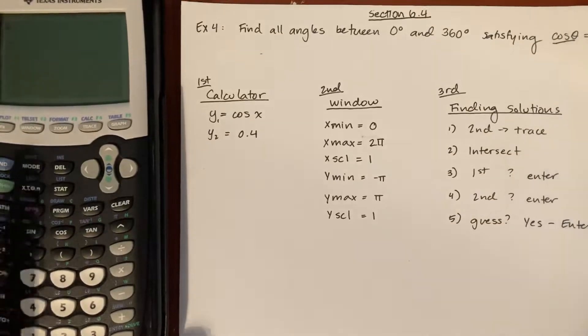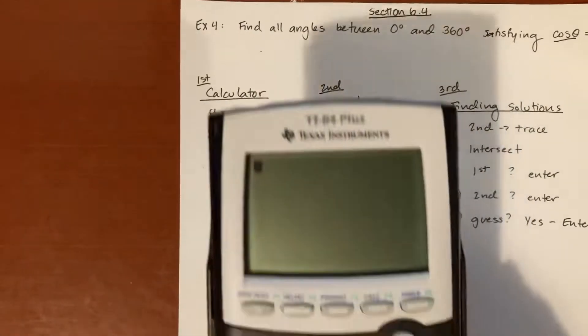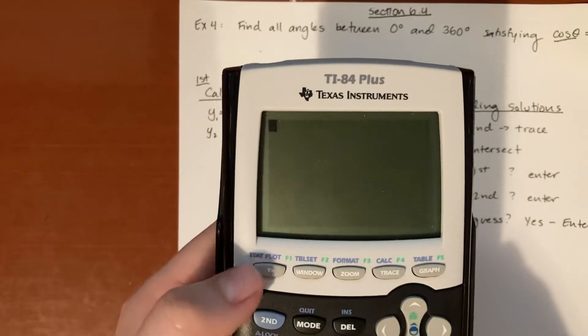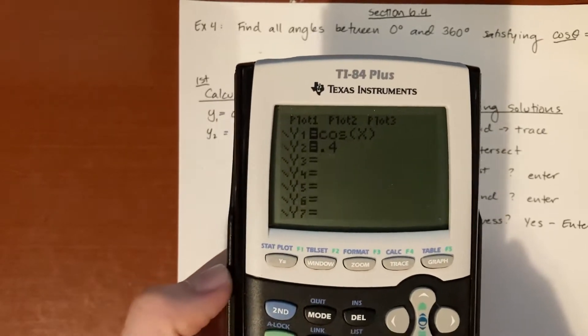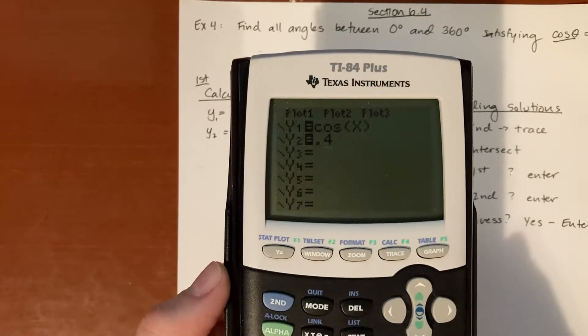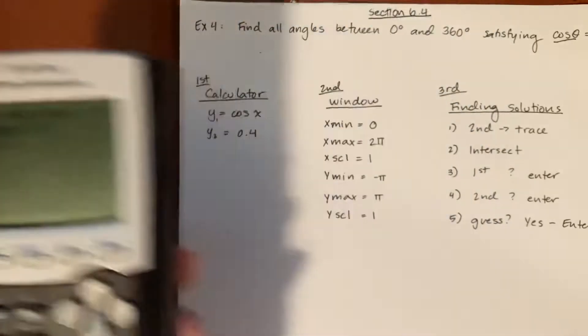Turning on my calculator right there. We're going to go to y equals, this button right here, click that. And as you can see, I already inputted it: cosine x and 0.4.